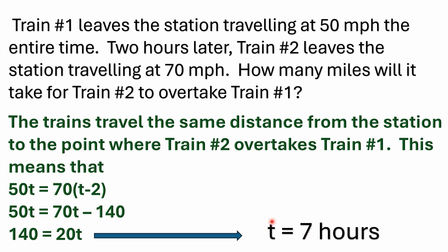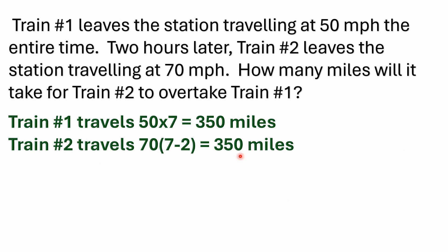T equals seven hours, so it takes train number one seven hours to get to this point, whereas train number two only takes five hours to reach that same point. Train number one traveled 50 times seven, which is 350 miles. Train number two traveled 70 times the quantity seven minus two — seven minus two is five — and 70 times five is 350 miles.